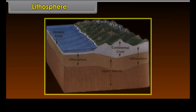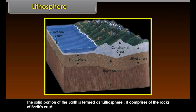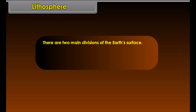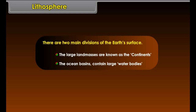Lithosphere. The solid portion of the earth is termed as lithosphere. It comprises the rocks of earth's crust and a shallow layer of soil that contains nutrient elements necessary for all types of organisms. There are two main divisions of the earth's surface. The large land masses are known as the continents. The ocean basins contain large water bodies.